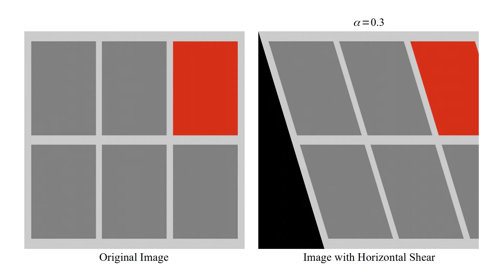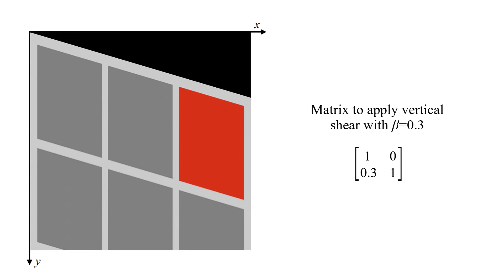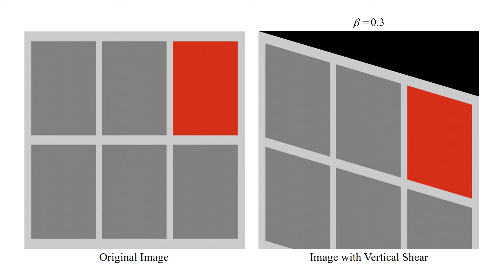This is the matrix to apply vertical shear with beta equal to 0.3, and in this formula with beta equal to 0.6. Here you can see the original image alongside the image with vertical shear applied.